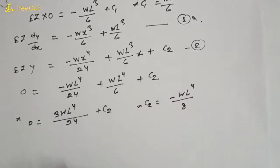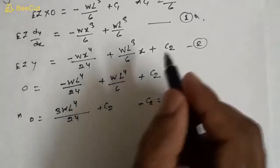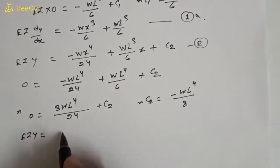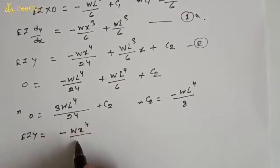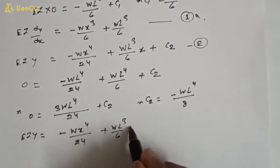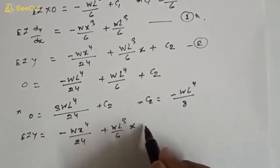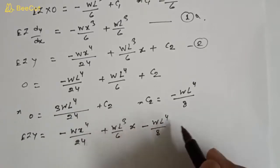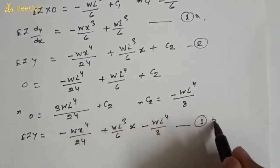Substituting C₂ into equation two, we get EI·y = −wx⁴/24 + (wl³/6)x − wl⁴/8. This is equation 1b, which is the general equation for deflection.